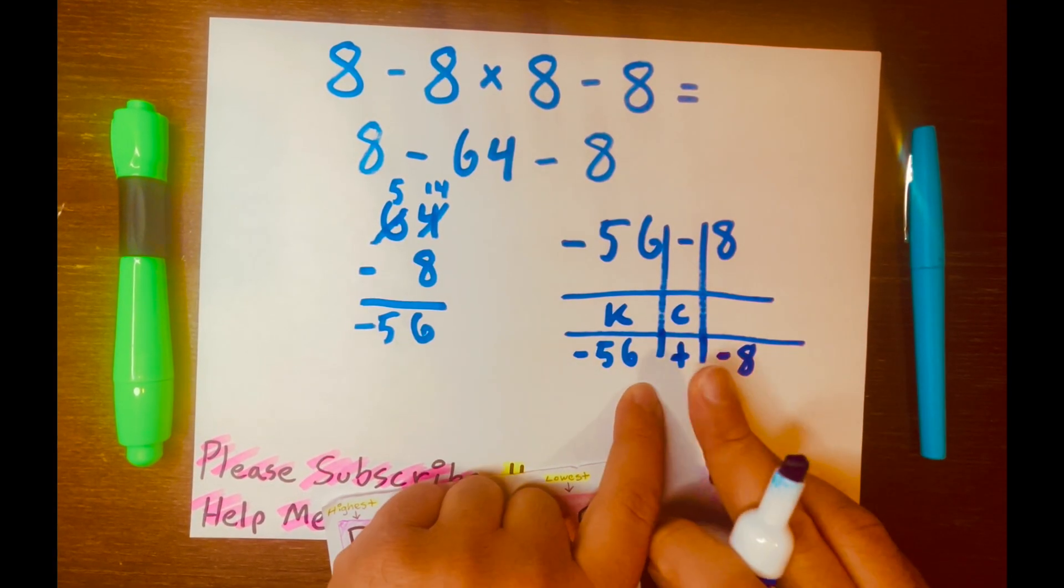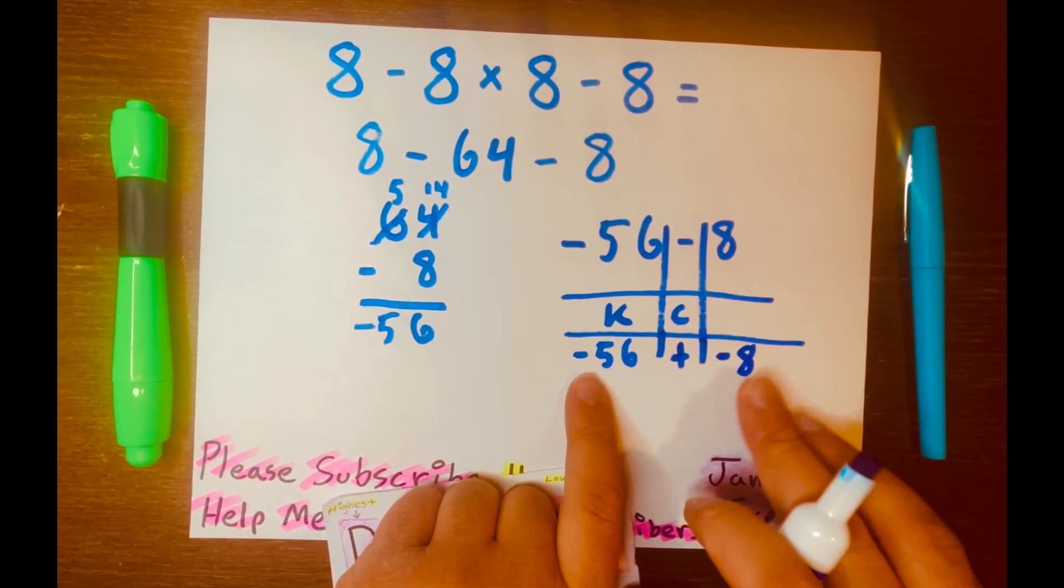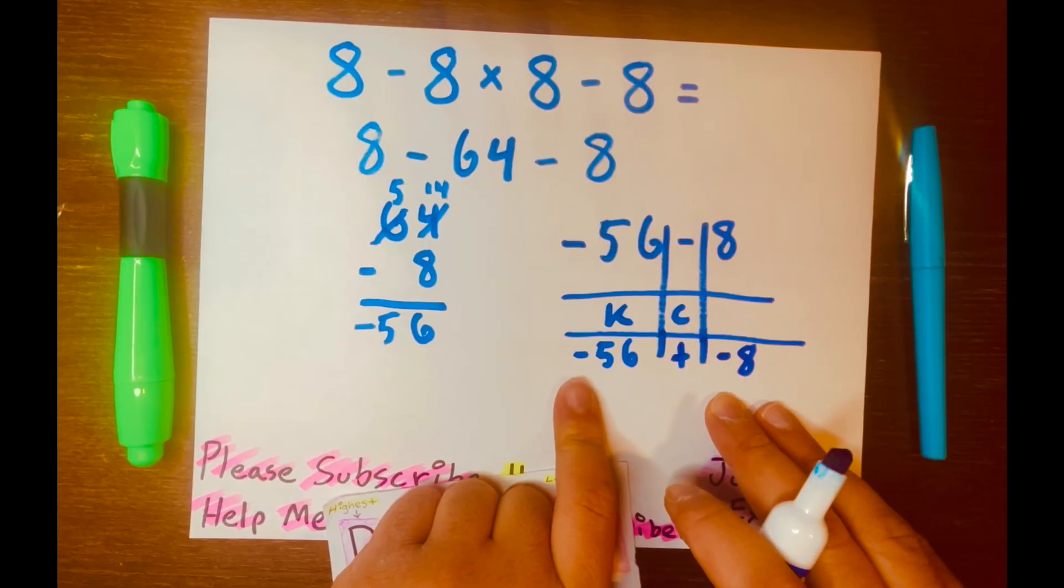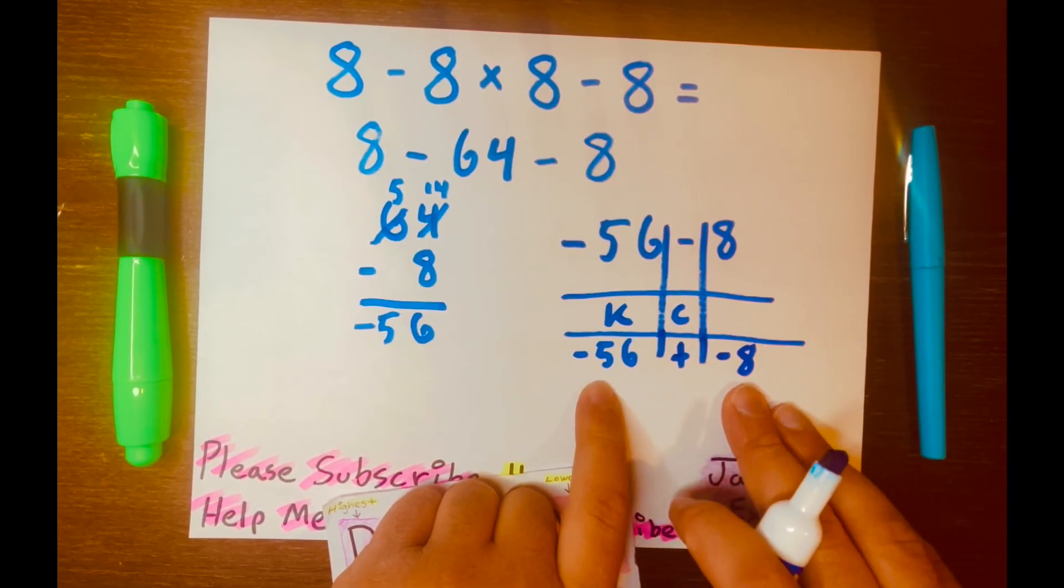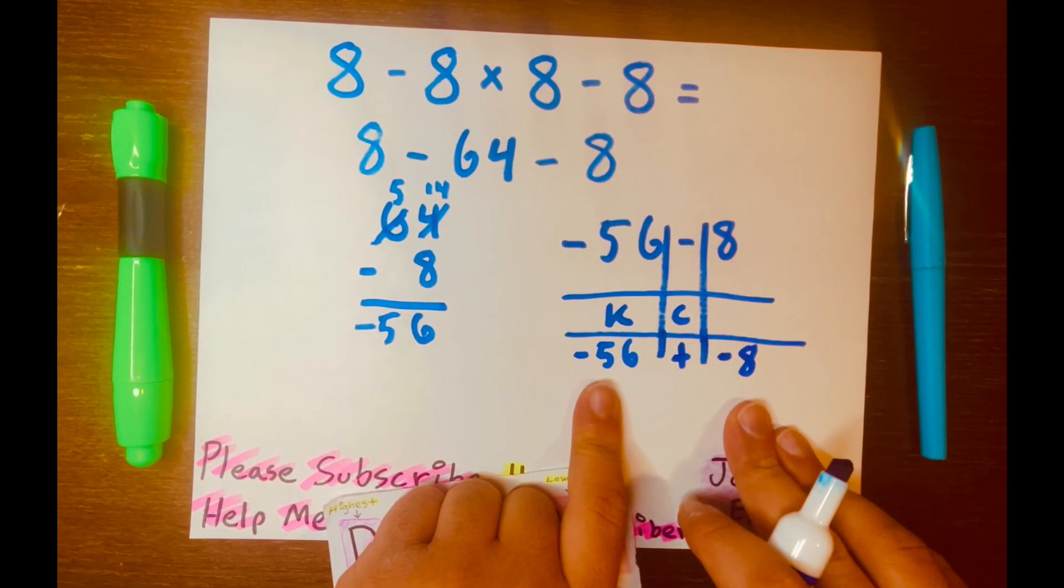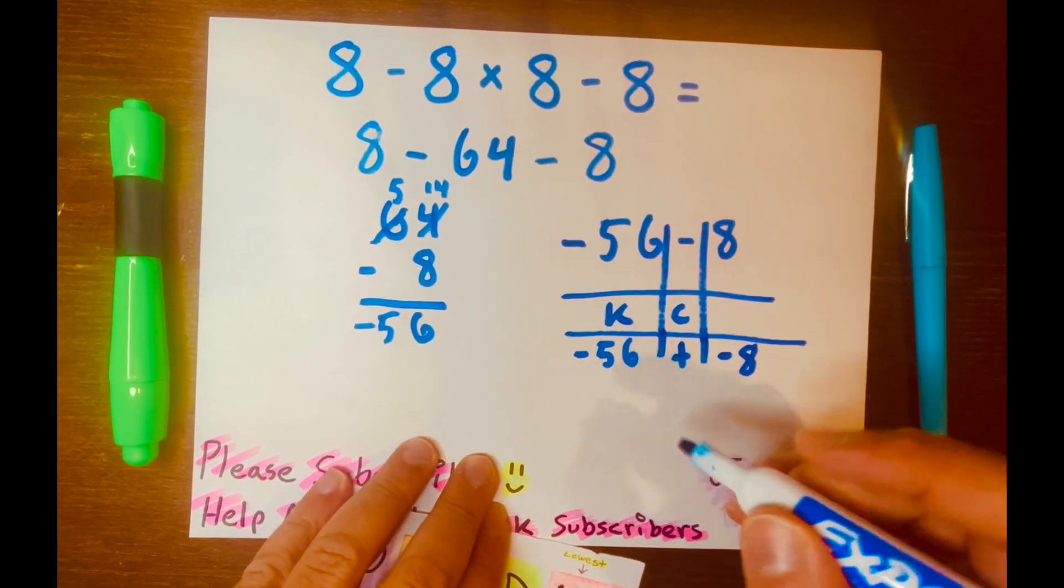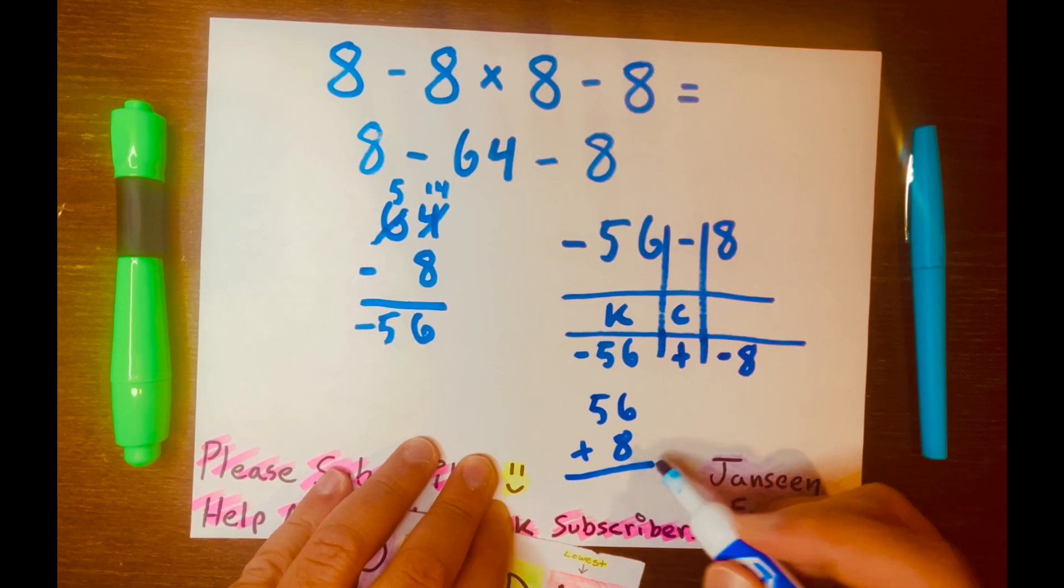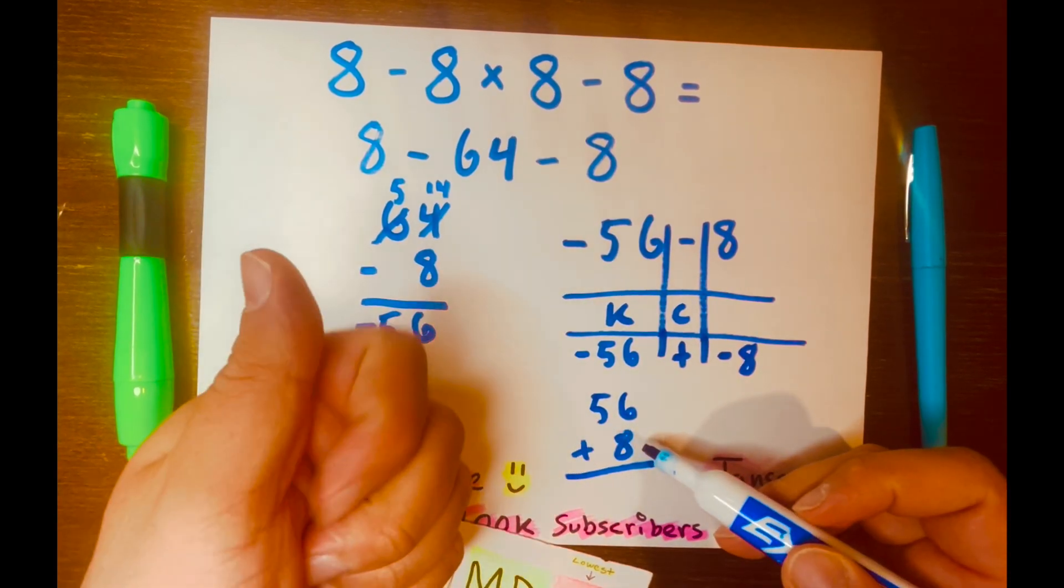And when you're adding two integers or two numbers with the same sign. So same sign, you add them both and keep the same sign. So what is 56 plus 8? So 8, 9, 10.